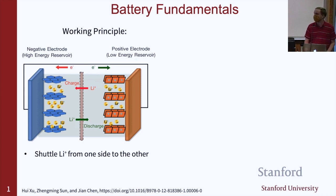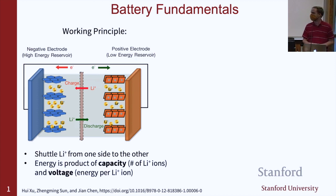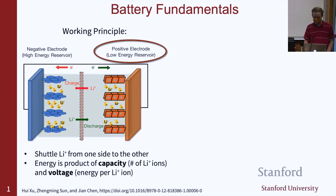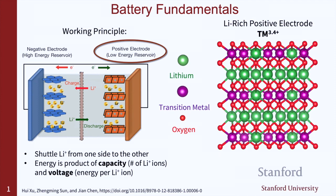In general, the amount of energy we can extract from a battery is the product of two things. The first is the capacity, which refers to the number of lithium ions moving back and forth in a given cycle. The second is the voltage, related to the energy we can extract per lithium ion that moves. In my talk today, I'm only going to focus on the positive electrode. If we take a look at the structure of the positive electrode material I've been working with, you'll see a layered structure with layers of oxygen, lithium, and transition metals. Some of the transition metals are replaced with lithium atoms, which is why it's known as a lithium-rich positive electrode.